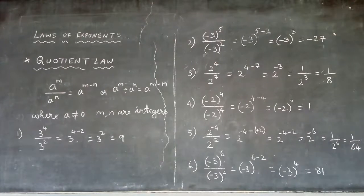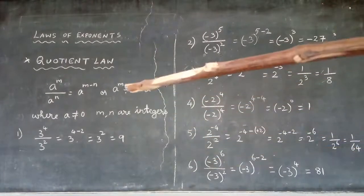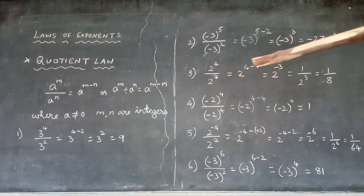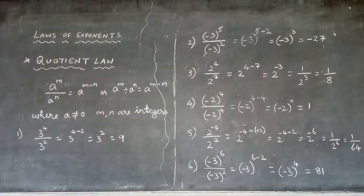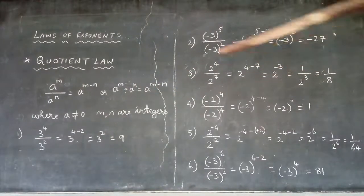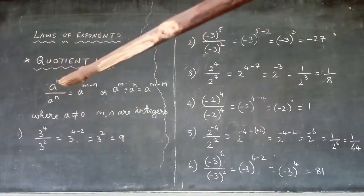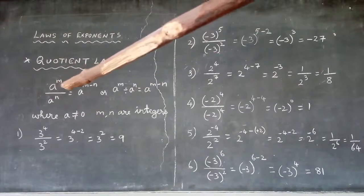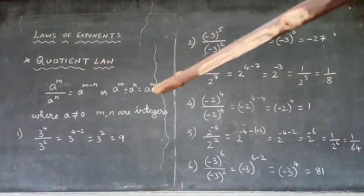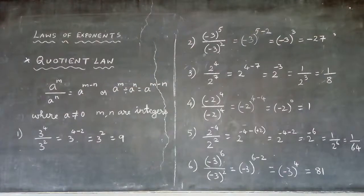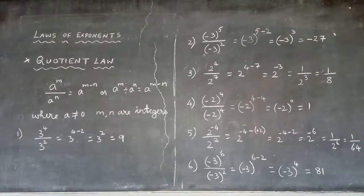Sometimes the question will not use a fraction line — they will give you a division symbol instead. Either way, write the base and subtract the exponents: numerator exponent first, then minus the denominator exponent. Use this concept and work out the sums based on the quotient law.